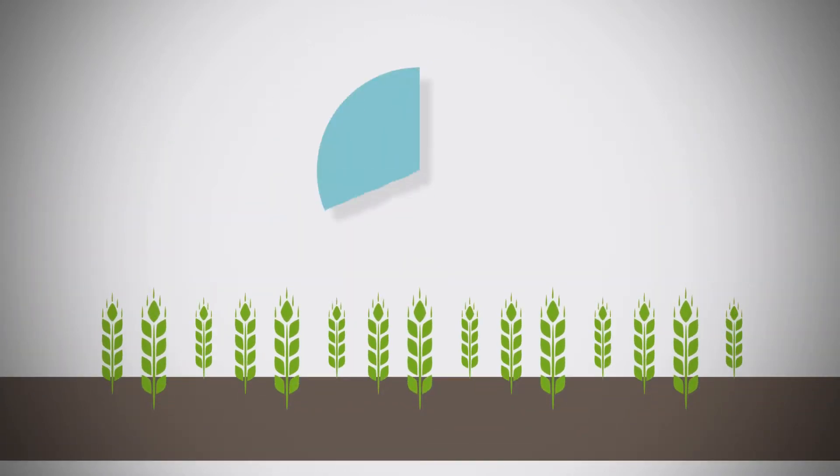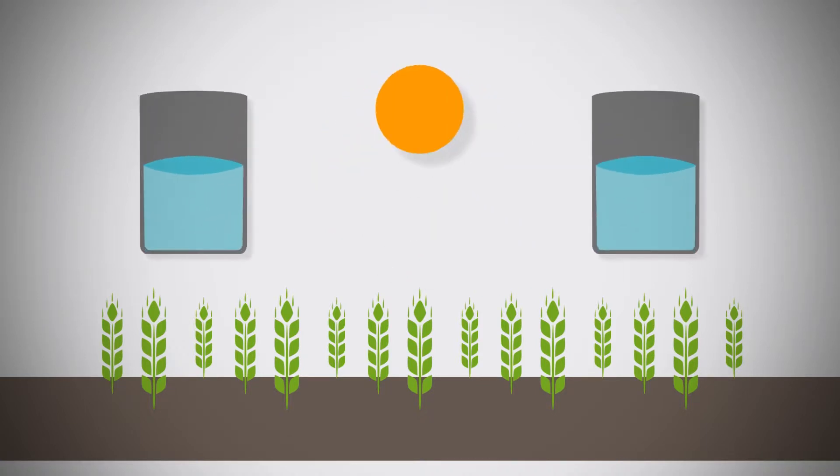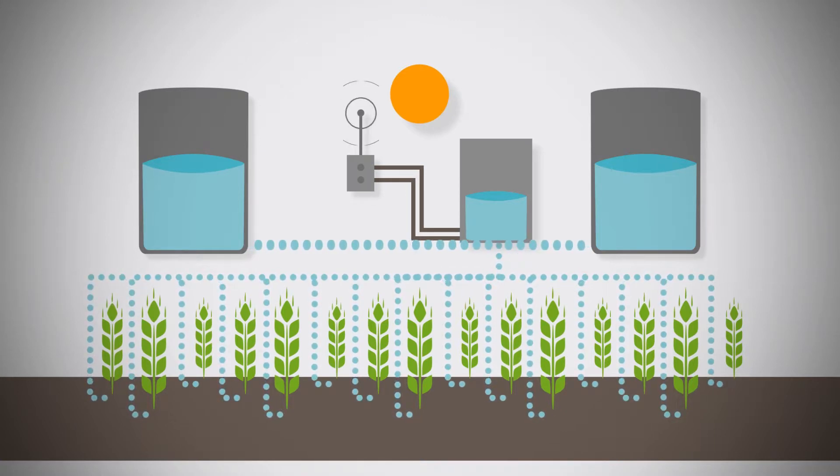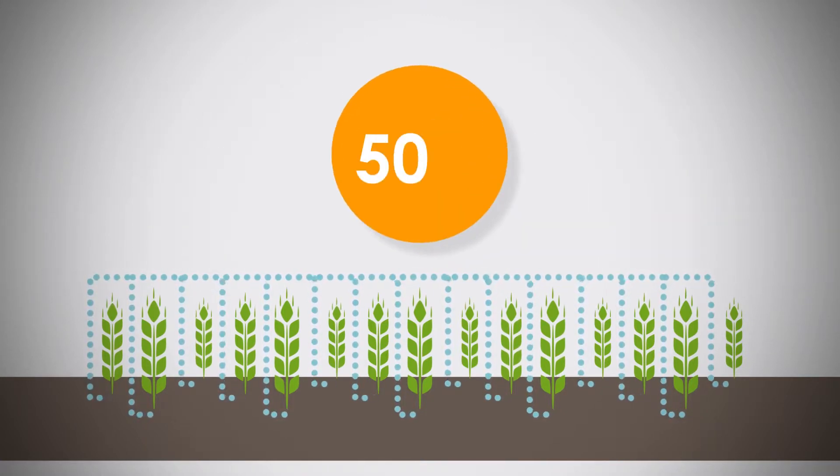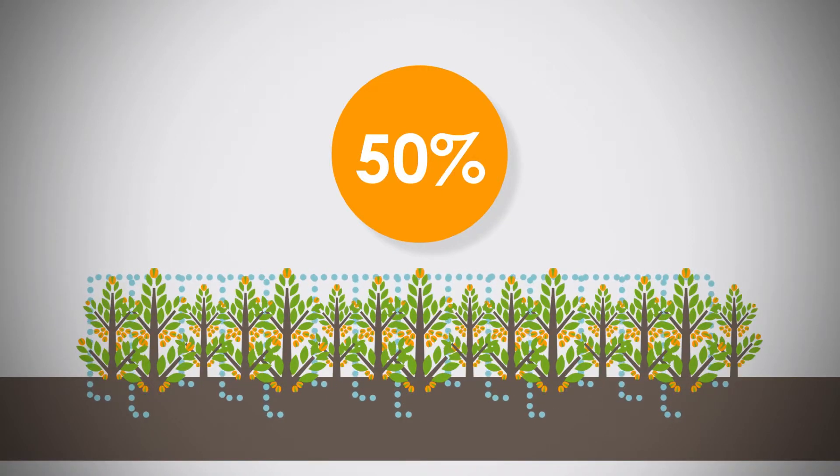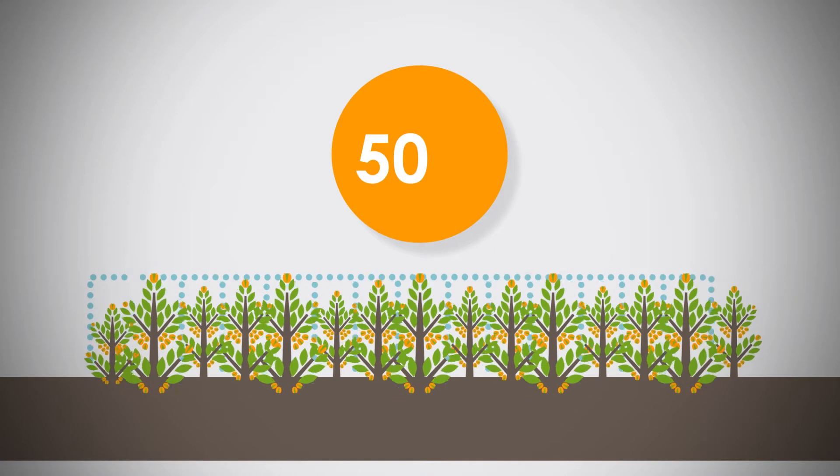The use of new methods such as the DOFISIS technology enables an increase in efficiency of up to 50% compared to conventional irrigation methods, for example for pistachios, through demand-oriented irrigation with purified wastewater.